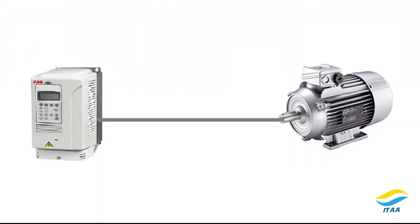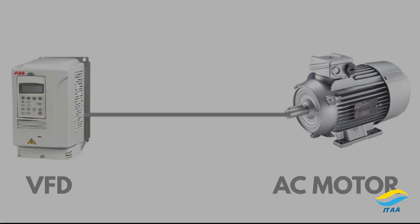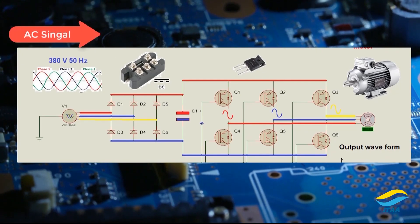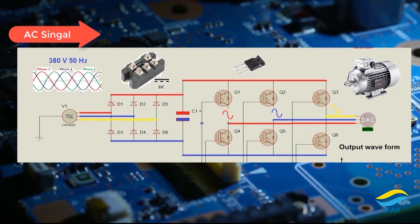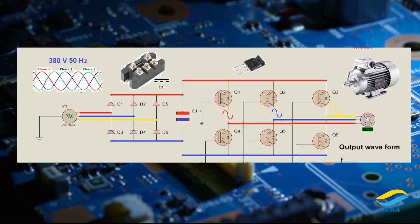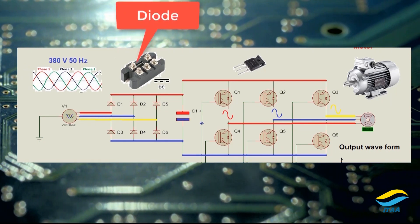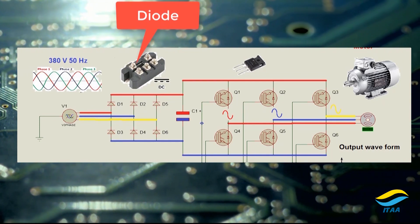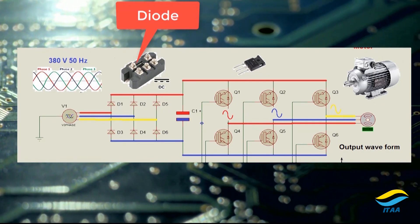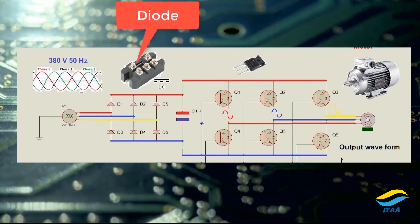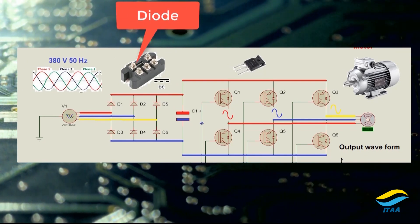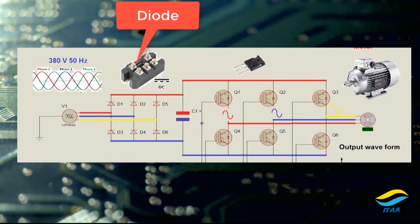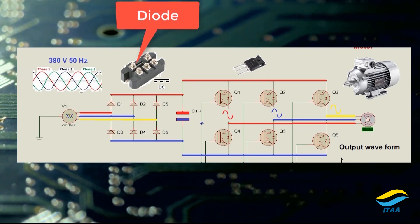Now let's get into the hardware of the VFD — what is inside the VFD. First of all, when an AC signal is injected into the VFD, it has to pass through the diodes. The purpose of the diodes is to convert the incoming AC signal to DC. The DC signal coming from the output of the diodes is not very clean.